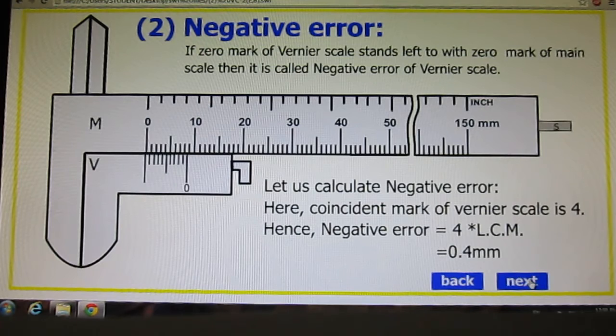Now negative error. If zero mark of Vernier scale stands left to zero mark of main scale then it is called negative error of Vernier Caliper. Here it is on the left hand side.